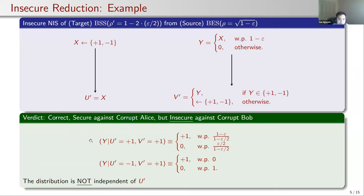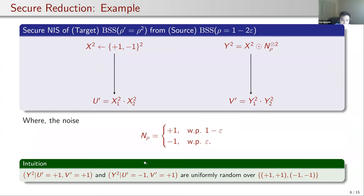The reason it is not secure against a corrupt Bob is that the two conditional distributions are not independent of U', which is Alice's output. Next, let's look at a secure reduction where we simulate one sample of BSS rho' from two independent samples of Binary Symmetric Source with maximal correlation rho. The reduction is very simple: both parties output the product of their samples — U' equals the product of the first sample times the second sample, and similarly for Bob. We can verify that this is a correct and secure construction.